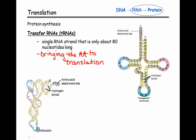Once that three-dimensional shape is achieved, we end up with two unique ends on our tRNA molecule. One of those ends is called the amino acid attachment site, where an amino acid is going to get attached. We do have 20 different amino acids inside the cell, and a specific one will be attached at that site.